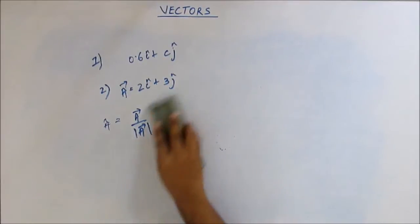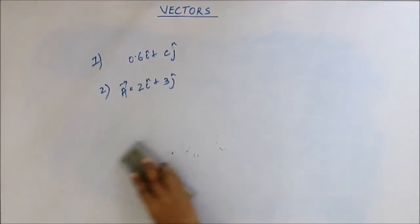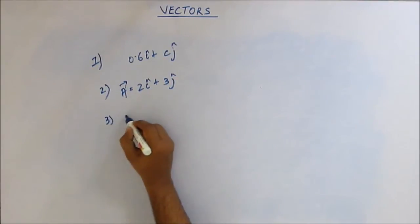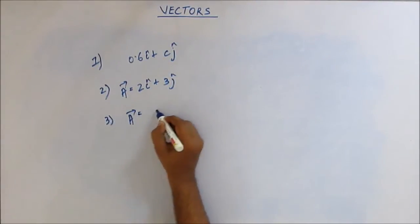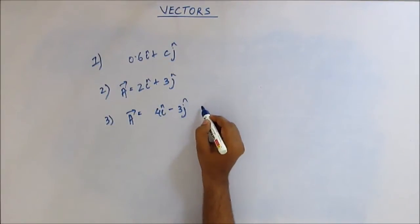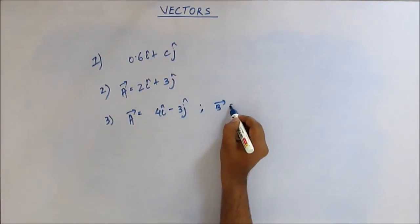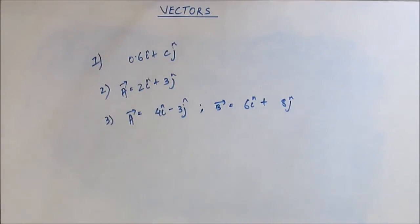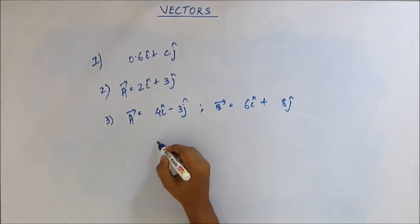Once again, congratulations to all of you who got that one right. Question number 3: suppose there is a vector A = 4i cap minus 3j cap, and there is a vector B = 6i cap plus 8j cap. Now try this one out mentally, without using pen and paper. Give me the magnitude of the summation of these two vectors.